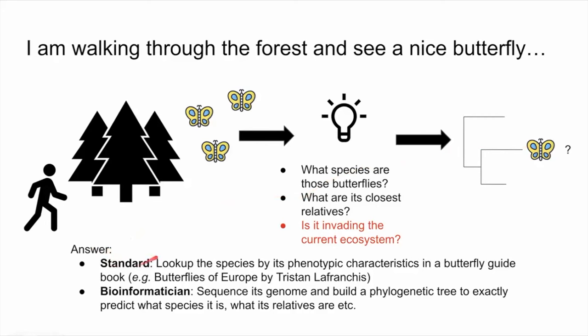So how would I go about it? The standard approach would be to take the species and look it up using some phenotypic characteristics — like the yellow color of the wings or the blue circles — in a butterfly guidebook. But since I'm a bioinformatician, I would take that species and sequence its genome and build a phylogenetic tree to precisely predict what species it is, what its relatives are, and have a very precise definition of what the species is.